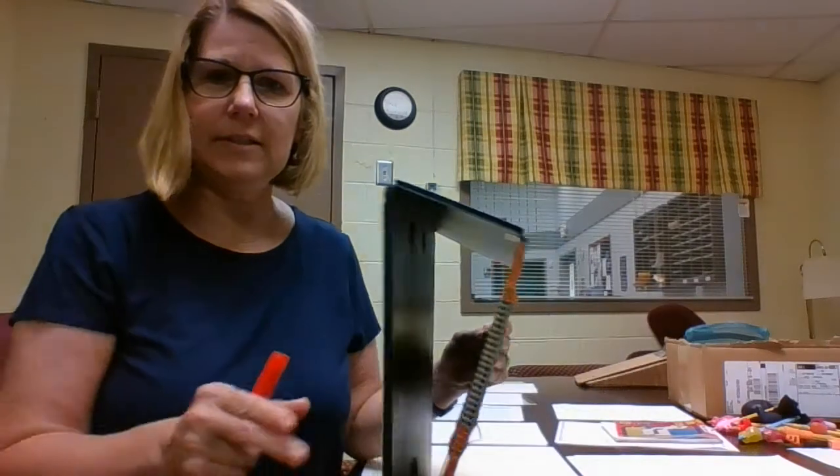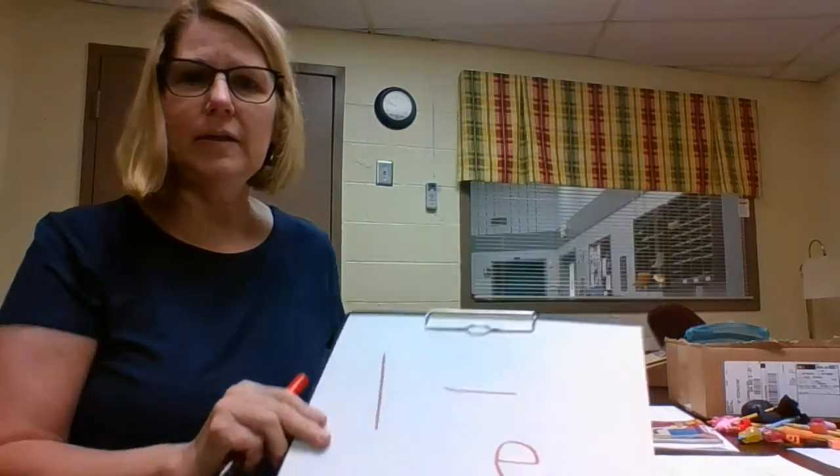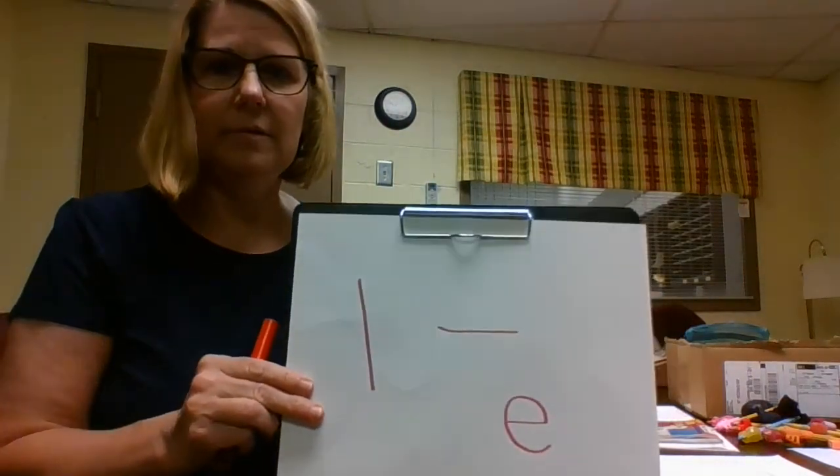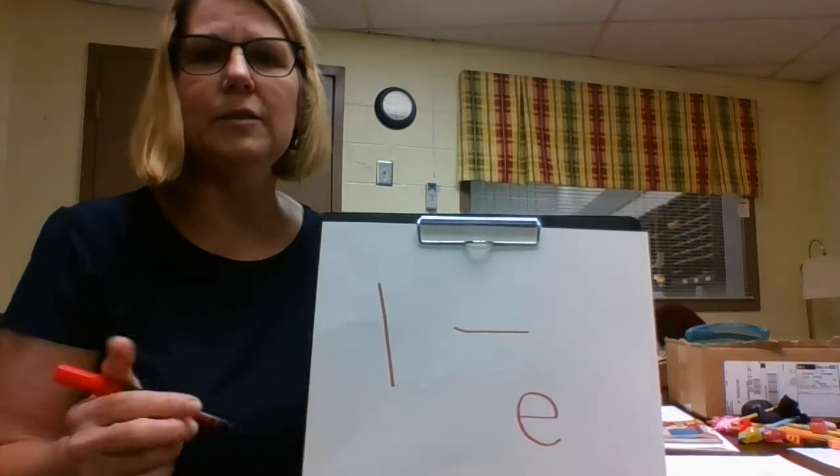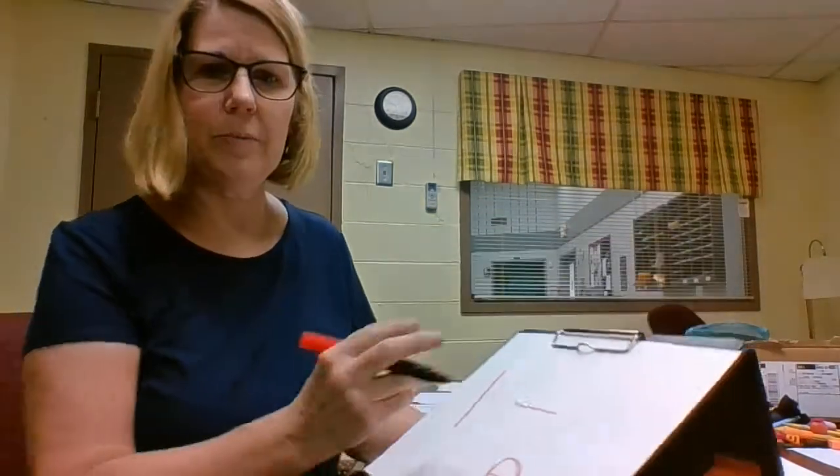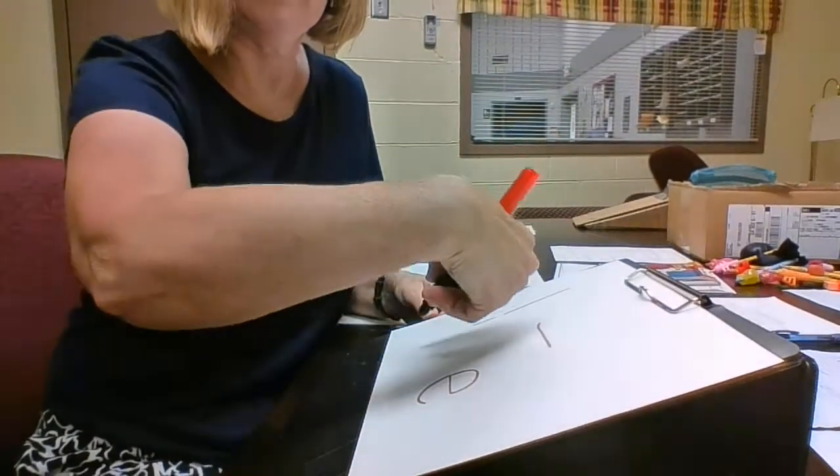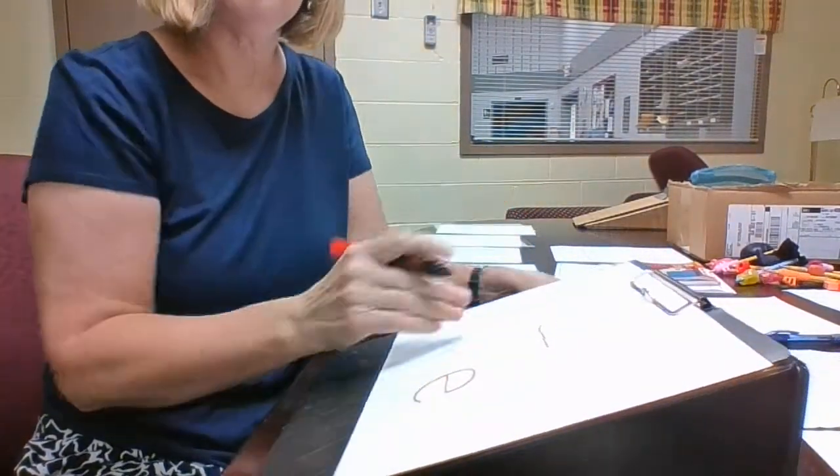Another thing to use is the slant board. It sort of just raises the writing up and helps kids with wrist position. So you want to have the proper wrist position this way instead of curled under. It just raises that writing area up for you so you'll get it correct.